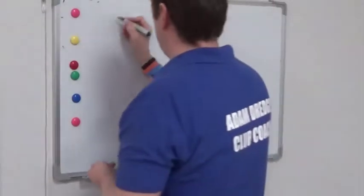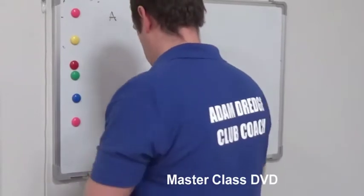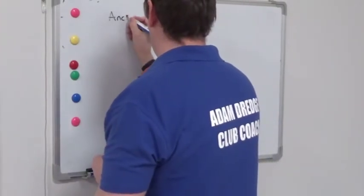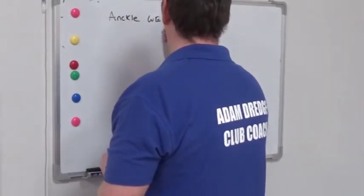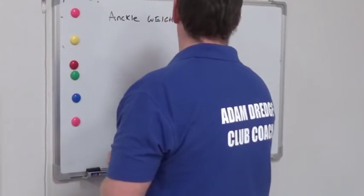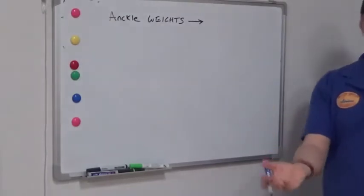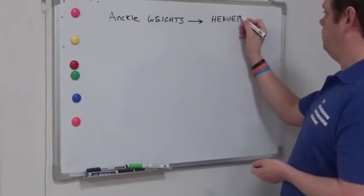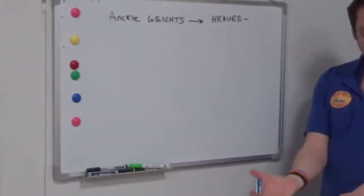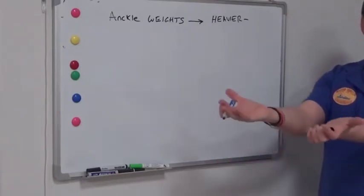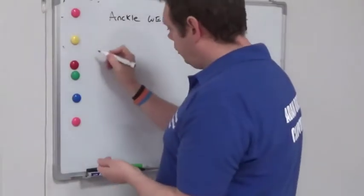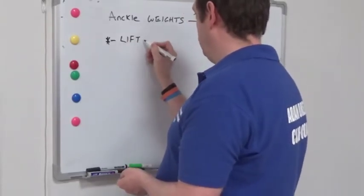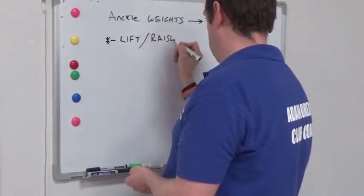First of all, when we used the ankle weights the other day, you would feel that your legs are sort of lower down because they're heavier. So because they're heavier, you're having to not really get more movement necessarily, but you're almost having to try and lift or hold them there. Does that make sense? So because they're heavy it focuses you to lift or raise your legs.